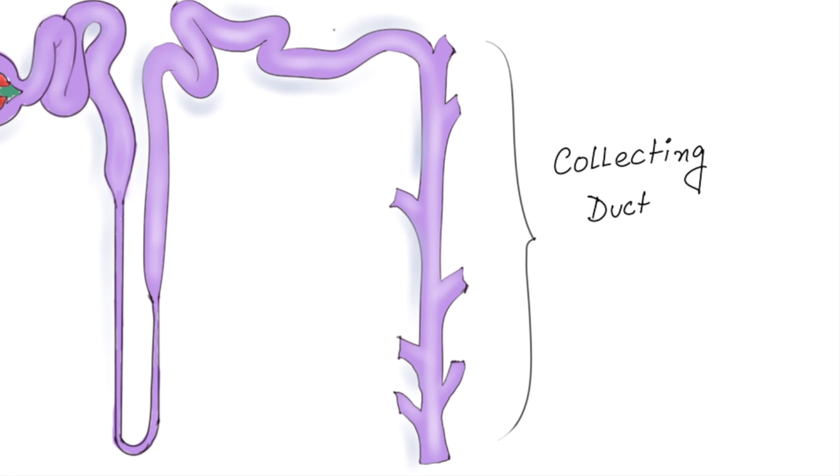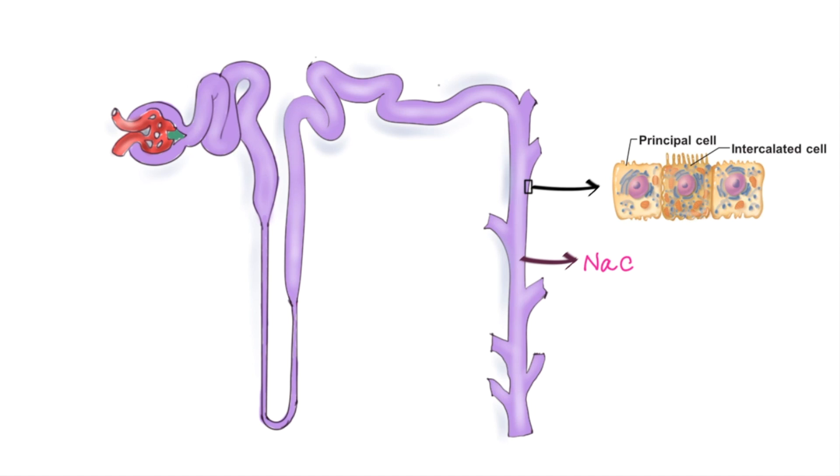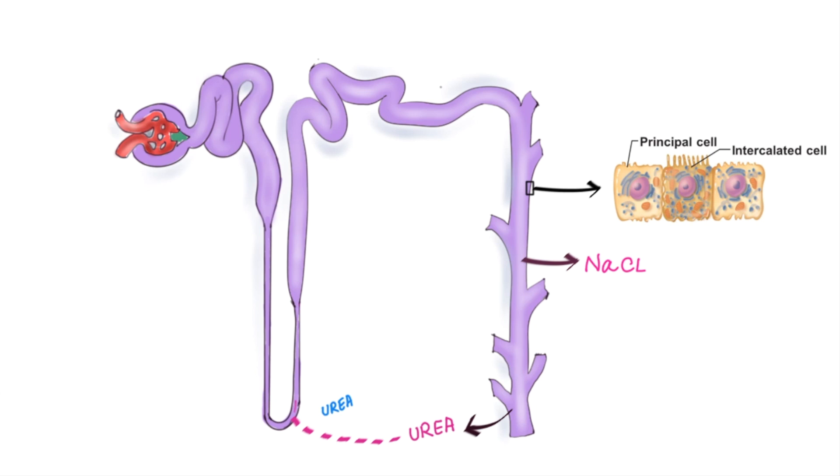The collecting duct, which is composed of principal and intercalated cells, is where the final adjustments take place before the filtrate leaves as urine. Here sodium chloride is reabsorbed in addition to urea. Although urea can re-enter the tubule at the loop of Henle in the process known as urea recycling.